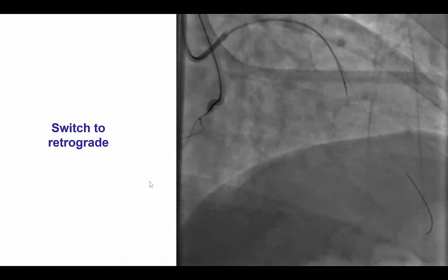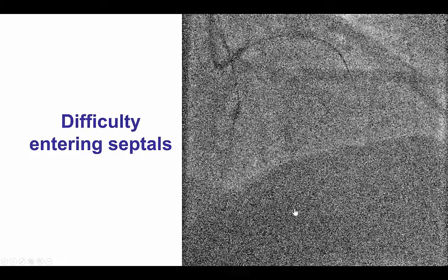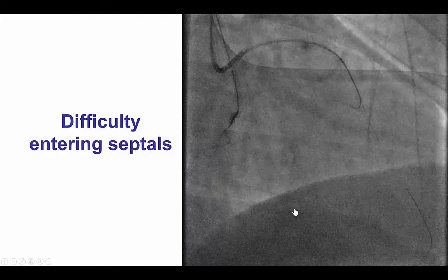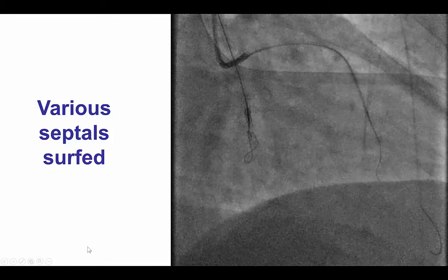As a result, we decided to give a try to retrograde crossing as the collaterals appeared to be favorable. We had some injection of the collaterals showing some connection to the PDA. However, this was not connecting, and then we had difficulty entering into more distal collaterals. Unfortunately, despite surfing, several of those collaterals were unable to go retrograde, which is something that happens in about one in five retrograde cases.